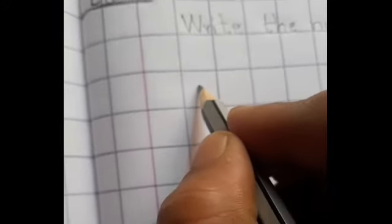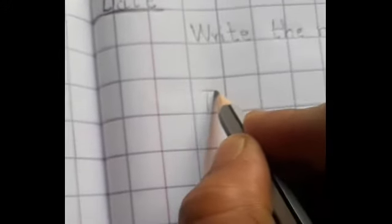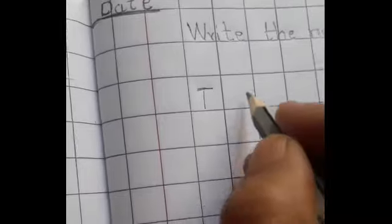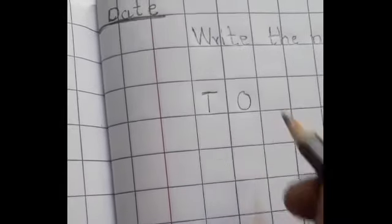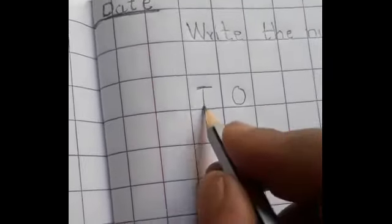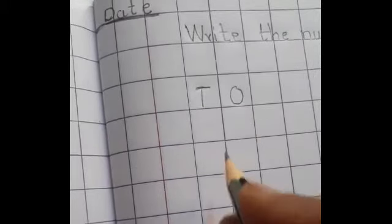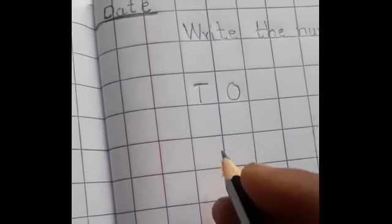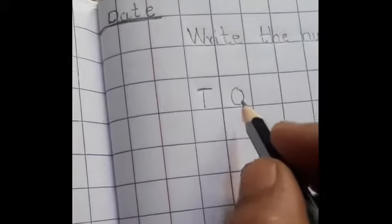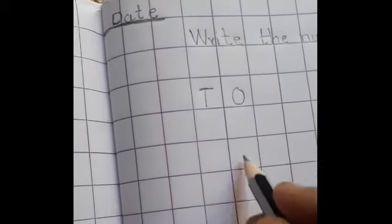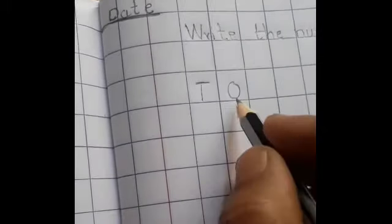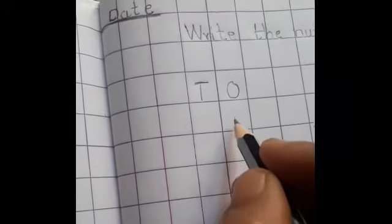Here I request to parents to write here T for Tens and O for Ones. T and O. Okay. Now let's start our number writing. You have to write the number 1 to 9 in this column. In ones column. This is O means Ones column. So start your writing.